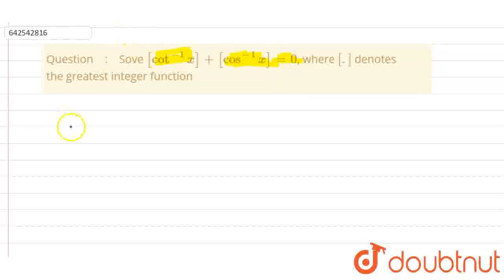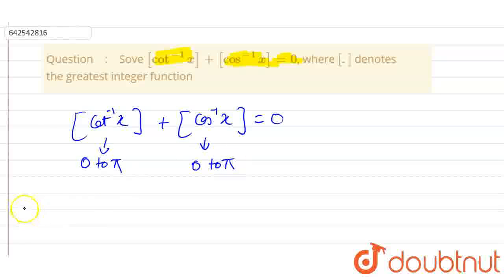Let's start this question. First of all, we have to know that cot inverse x greatest integer and greatest integer of cos inverse x is equal to 0, and they have the range between 0 to π. Similarly, cos inverse x is also having 0 to π.